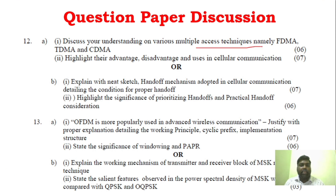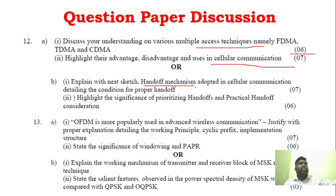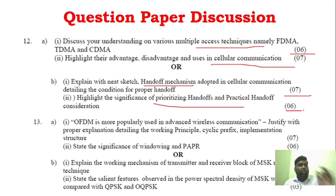You can see understanding of various multiple access techniques — FDMA, TDMA, CDMA — it is all covered. That is 6 marks to write. Next, advantages of cellular communication. Similarly, handoff mechanism, different types of handoff, prioritizing handoff and practical handoff considerations. In WC, 6–8 mark split-ups are good — if you cover handoff, you can complete 13 marks.